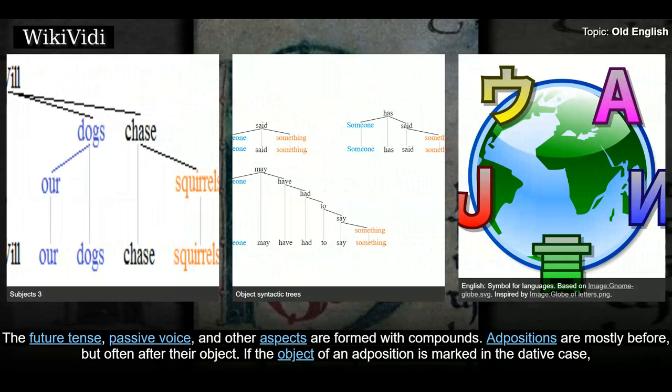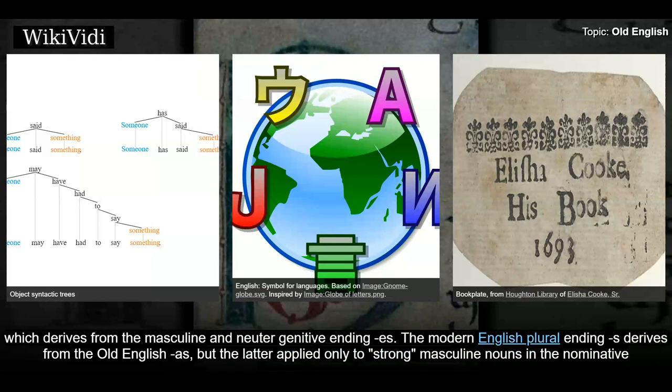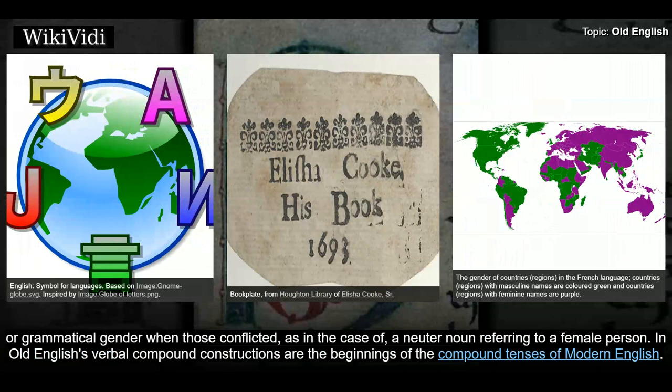Adpositions are mostly before but often after their object. If the object of an adposition is marked in the dative case, an adposition may conceivably be located anywhere in the sentence. Remnants of the Old English case system in Modern English are in the forms of a few pronouns and in the possessive ending 's,' which derives from the masculine and neuter genitive ending. The Modern English plural ending 's' derives from the Old English '-as,' but the latter applied only to strong masculine nouns in the nominative and accusative cases. Old English nouns had grammatical gender, while Modern English has only natural gender.